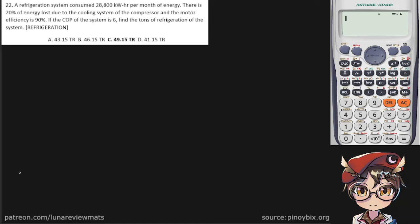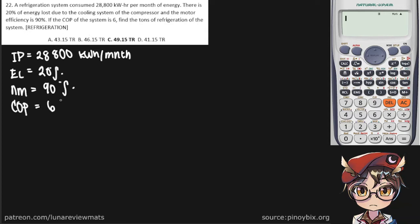A refrigeration system consumed 28,800 kilowatt hour per month of energy. Let's assume that's our indicated power. There is a 20% energy loss due to the cooling system compressor, and the motor efficiency is 90%. If the coefficient of performance, COP of the system is 6, find the tons of refrigeration of the system.